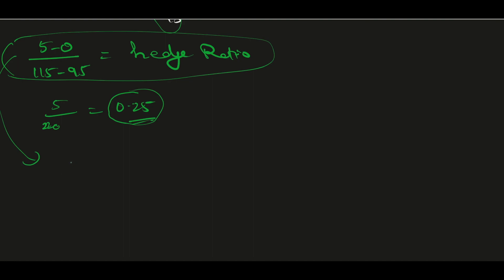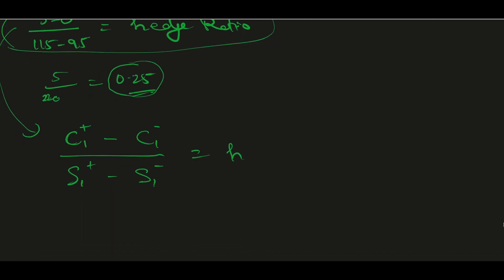So 5 represents the call option price at time 1 — that means after 3 months in this case — when the stock goes up, minus the call option price at time 1 when the stock comes down, divided by the stock price at time 1 when the stock price goes up, minus the stock price at time 1 when the stock price comes down — that equals the hedge ratio.